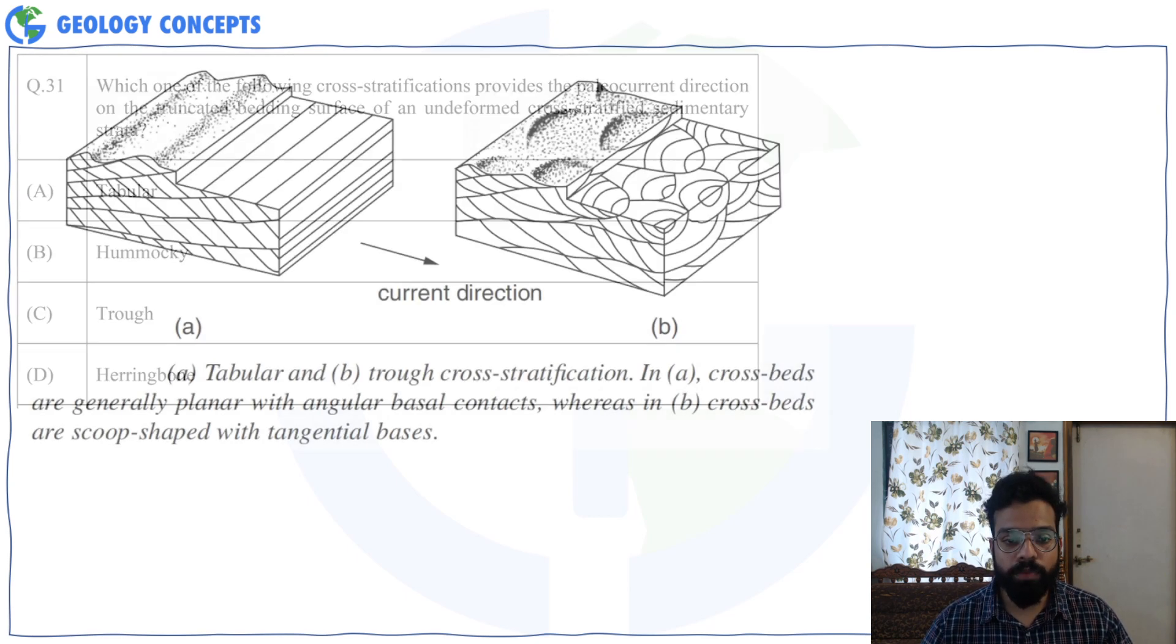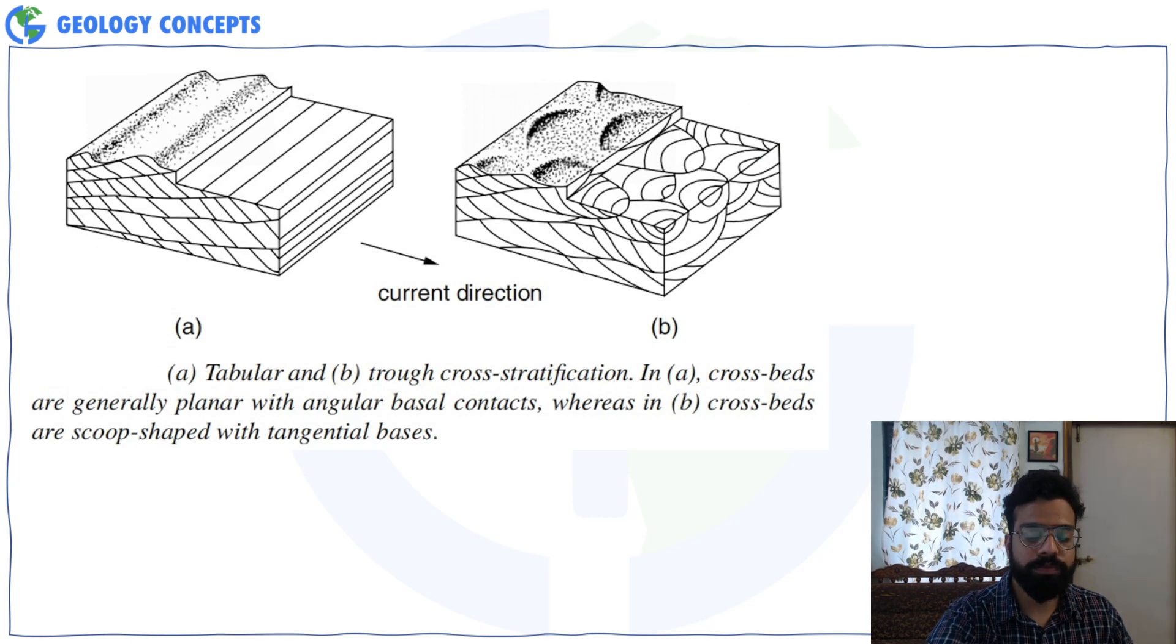If you look at the tabular cross stratification, you have a linear dune or a ripple. So when that migrates, it develops four sets like this. But if you look on the section parallel to the bedding surface, which we are looking at, you will see the trace of those four sets will be linear. So it is actually mimicking the shape of the crest line over here.